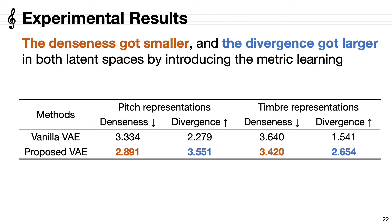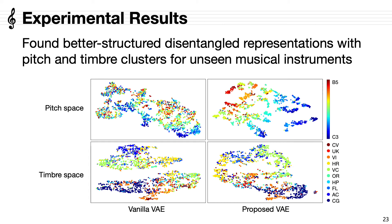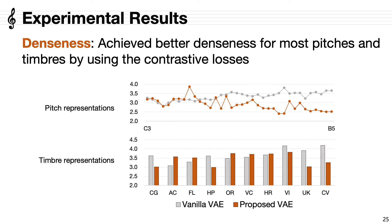This table shows the overall result. By introducing the metric learning, the denseness got smaller and the divergence got larger in both latent spaces, as is to be expected. These figures show the visualization of the pitch and timbre spaces. The proposed method found better structured disentangled representations with pitch and timbre clusters for unseen musical instruments. For example, the latent variables of the cello are grouped better in the proposed VAE. These figures also show the denseness for each pitch and unseen instrument. The proposed method achieved better denseness for most pitches and timbres by using the contrastive losses.